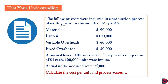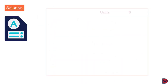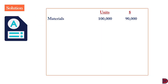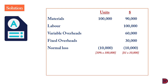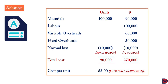For the abnormal gain solution: materials 100,000 units at $90,000; labor $100,000; variable overheads $60,000; fixed overheads $30,000. Normal loss is 10% of 100,000 = 10,000 units with scrap value of $1, totaling $10,000. Total: 90,000 units at $270,000. The cost per unit is still $3, which is $270,000 divided by 90,000 units.